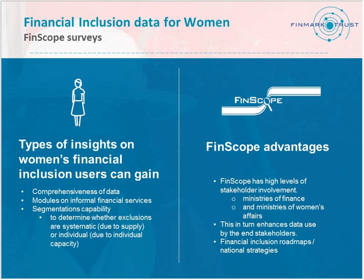The main advantage of FinScope is that we also try to help countries and relevant stakeholders map a financial inclusion roadmap. For example, in Seychelles, I was doing a baseline survey on literacy to look at national strategies of how to include and empower women. This is just one of the reasons why FinScope is so comprehensive.